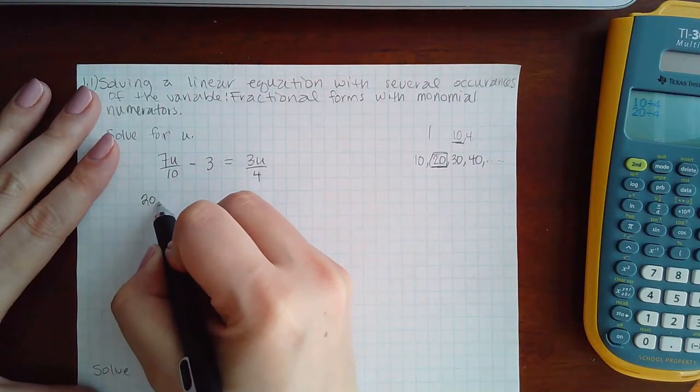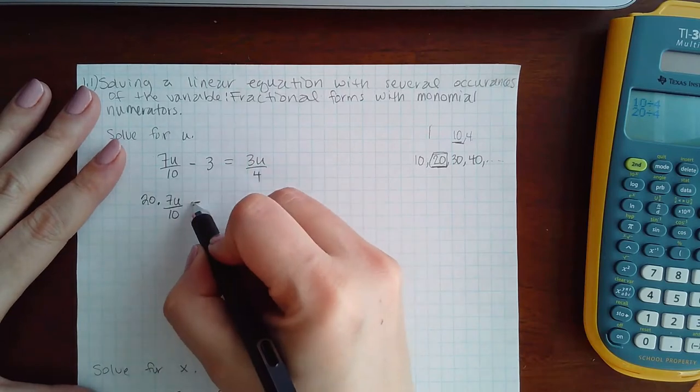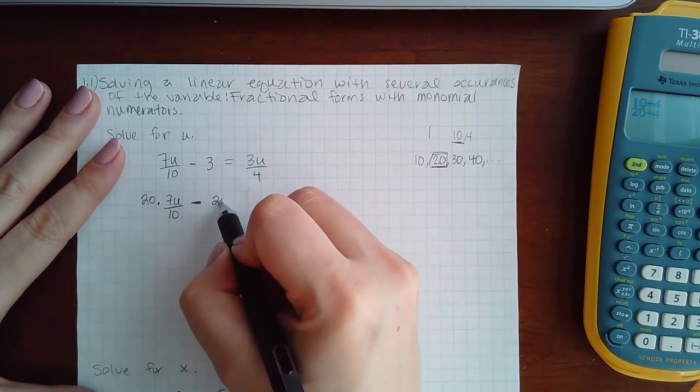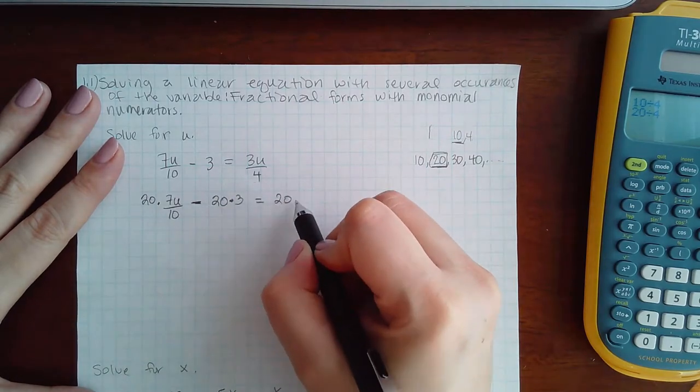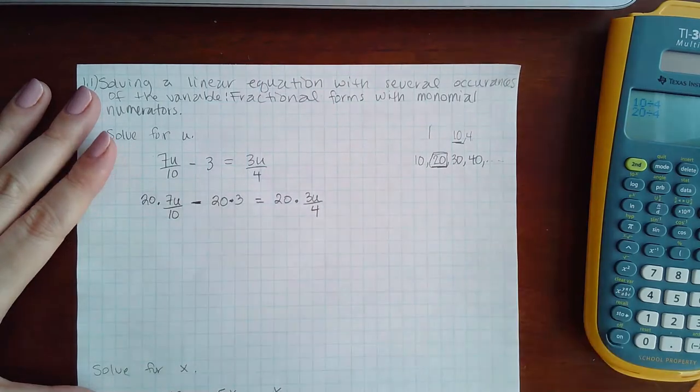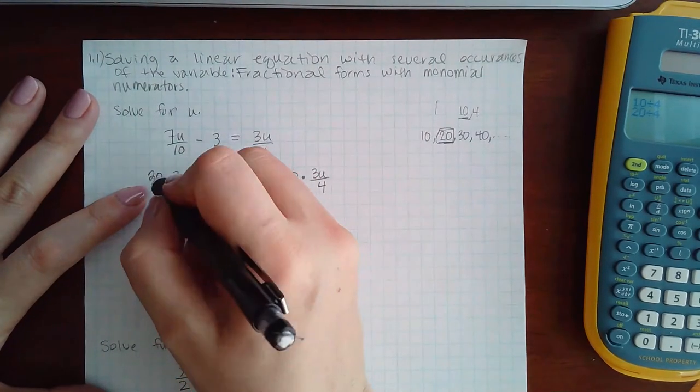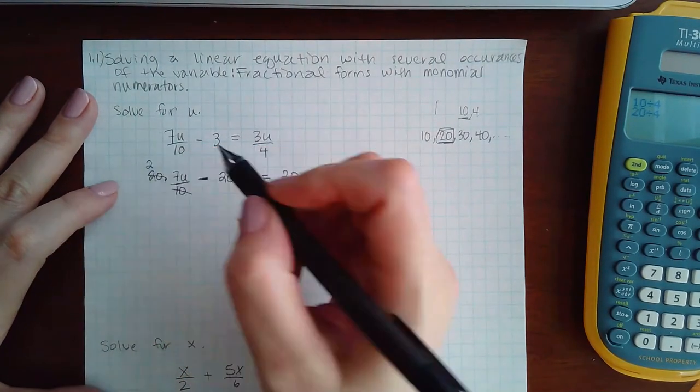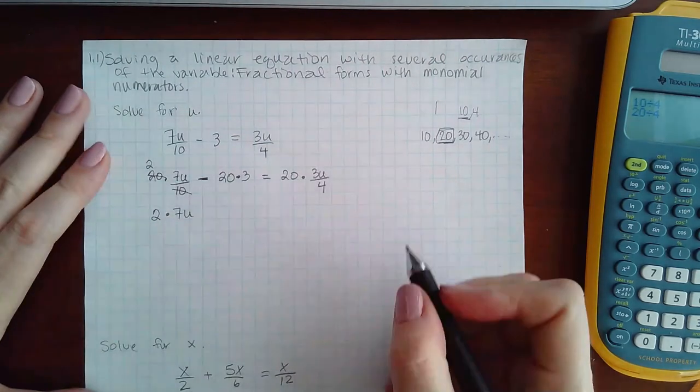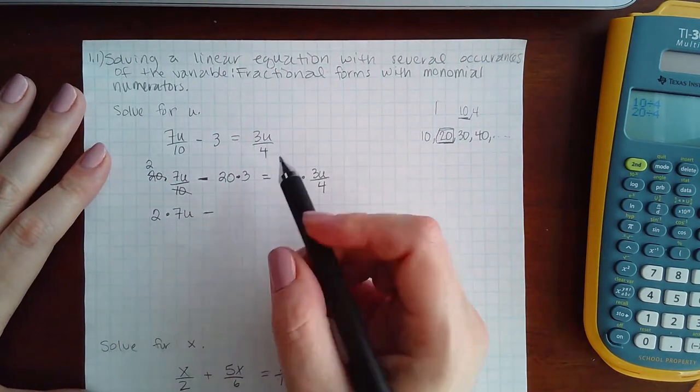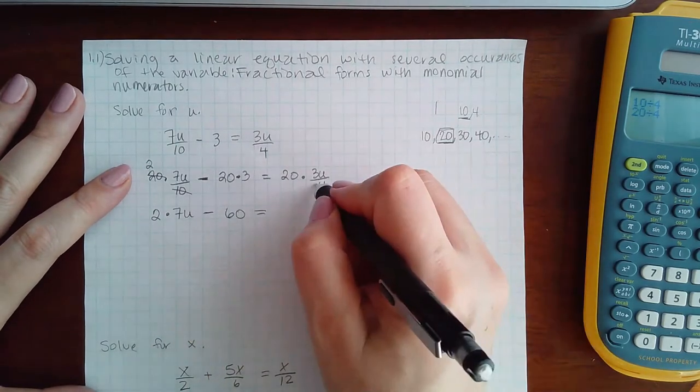So that is the number that I'm going to multiply to all three terms here. Now notice that I put the minus in front of my multiplication. This is important if you get into that habit now. So here 10 will go into 20 two times, leaving me with 2 times 7u left.